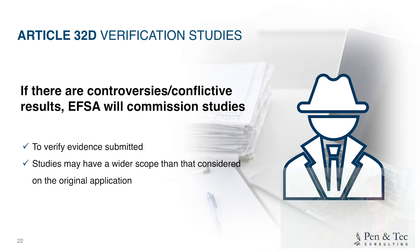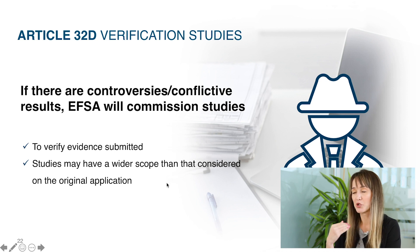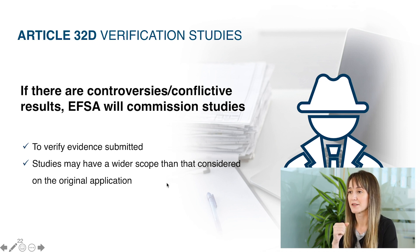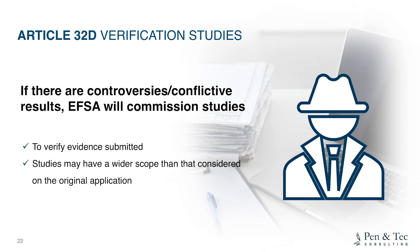Article 32d covers verification of studies. If there are controversies or conflicting results, EFSA can and will commission studies directly from contract research organizations to verify the evidence submitted. Applicants should note that these verification studies may have a wider scope than what was considered in the original application.